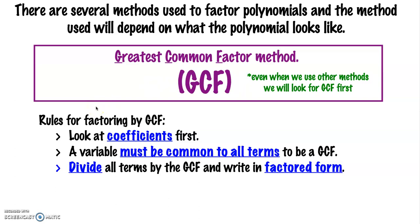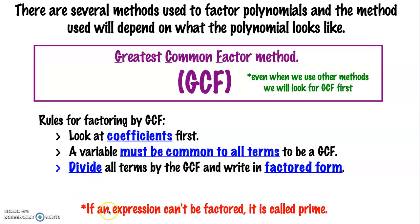The rules for finding and factoring by GCF: we want to look at the coefficients first. Remember, the coefficients are those numbers in front of the variables. We want to make sure that a variable is in common to all terms before we can factor it out. In order to factor it out, we're going to be dividing all the terms by the GCF and then writing our answer in factored form. If an expression can't be factored, it is called a prime expression — the same way we talk about prime numbers. If a number isn't divisible by anything other than itself and 1, we call it a prime number. Works the same way with polynomials.